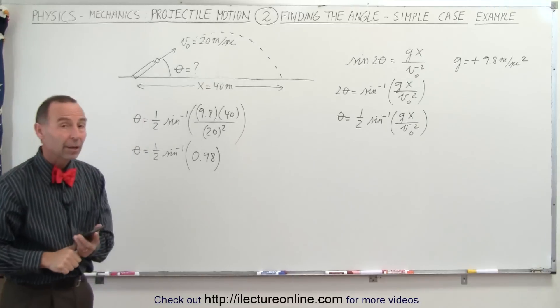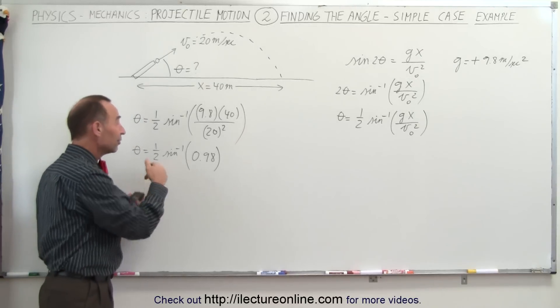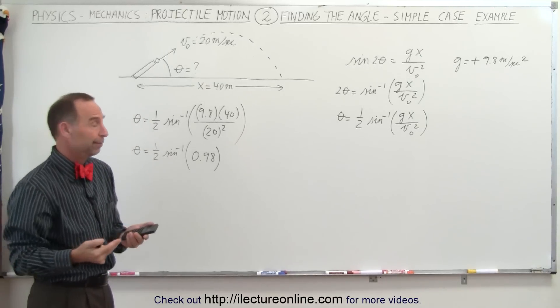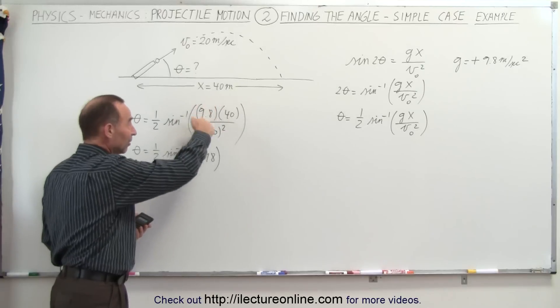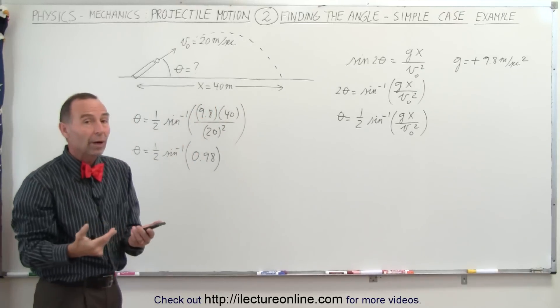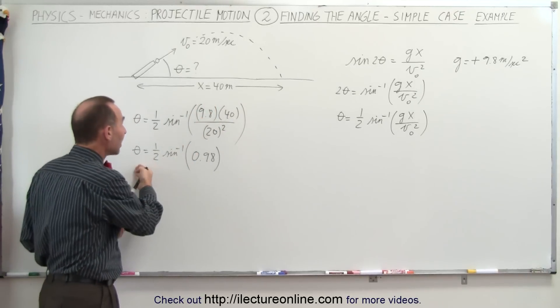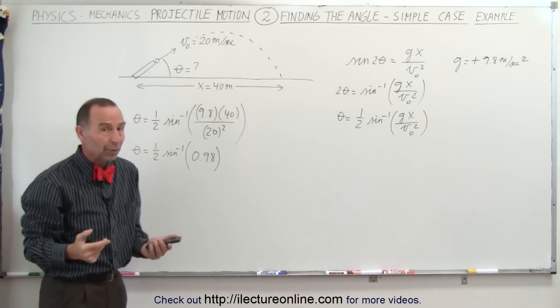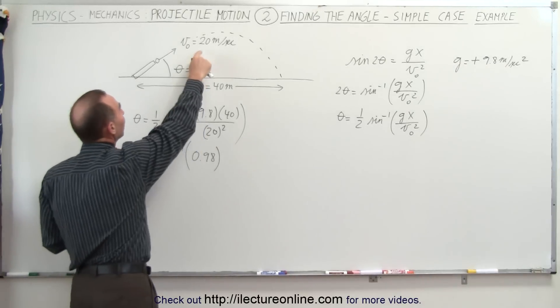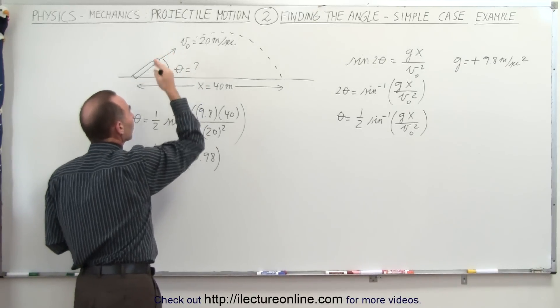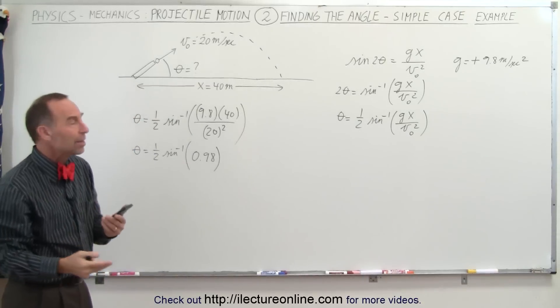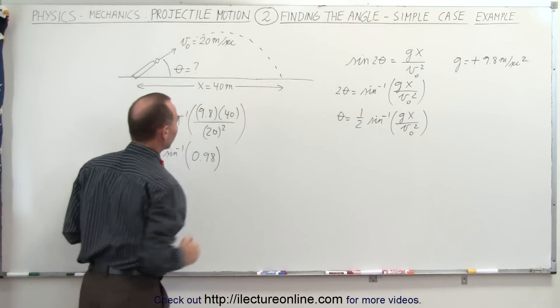Now here's a key thing. We can only take the arcsine of a number between 0 and 1. If for some reason this fraction ends up being greater than 1, then you know there's no such angle that can solve the problem. In other words, you cannot reach that range with the initial velocity, regardless of what the angle is. For no angle will you be able to reach that particular distance.